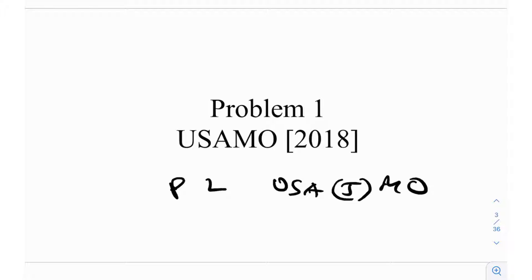This is a pretty easy problem — P1 on the USAMO and P1/P2 on the USAJMO can be done in about 10-15 minutes if you know your stuff. The sad part is that this was the only easy problem on the test; P2 through P6 on the USAMO were absolutely monstrous. We've discussed P2 before — a functional equation question, insanely hard. Let's solve P1 using two techniques.